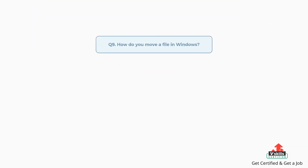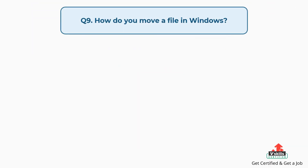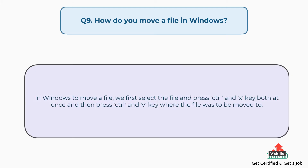Question number nine: how do you move a file in Windows? The answer is, in Windows to move a file, we first select the file and press CTRL+X, and then press CTRL+V at the location where the file is to be moved to.